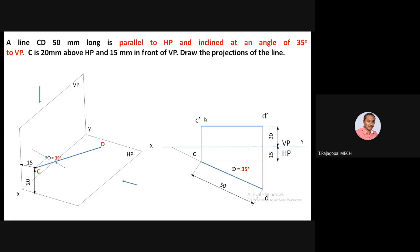For the projection of an inclined line, extend the projection in the top view until it cuts the XY reference line — the same procedure as before. That intersection point is V. Extend the projector from V, and from C-dash it will meet at one point correspondingly in the vertical plane above XY — this gives the vertical trace. Since the line is parallel to HP, there is no horizontal trace.